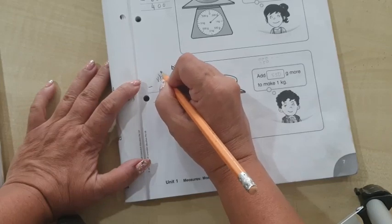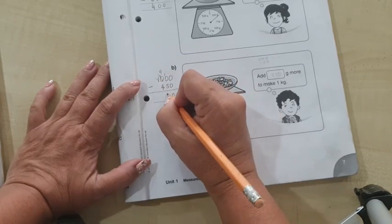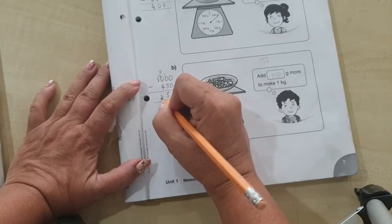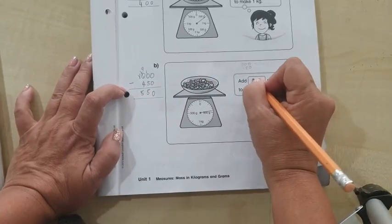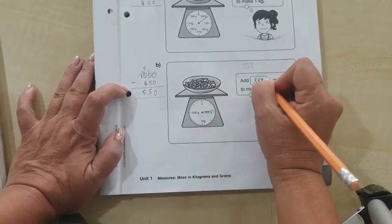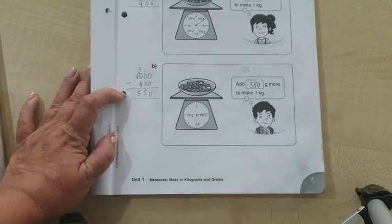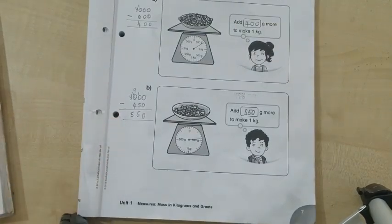Working through the subtraction gives us 550. So 550 grams has to be added to make 1000 grams.